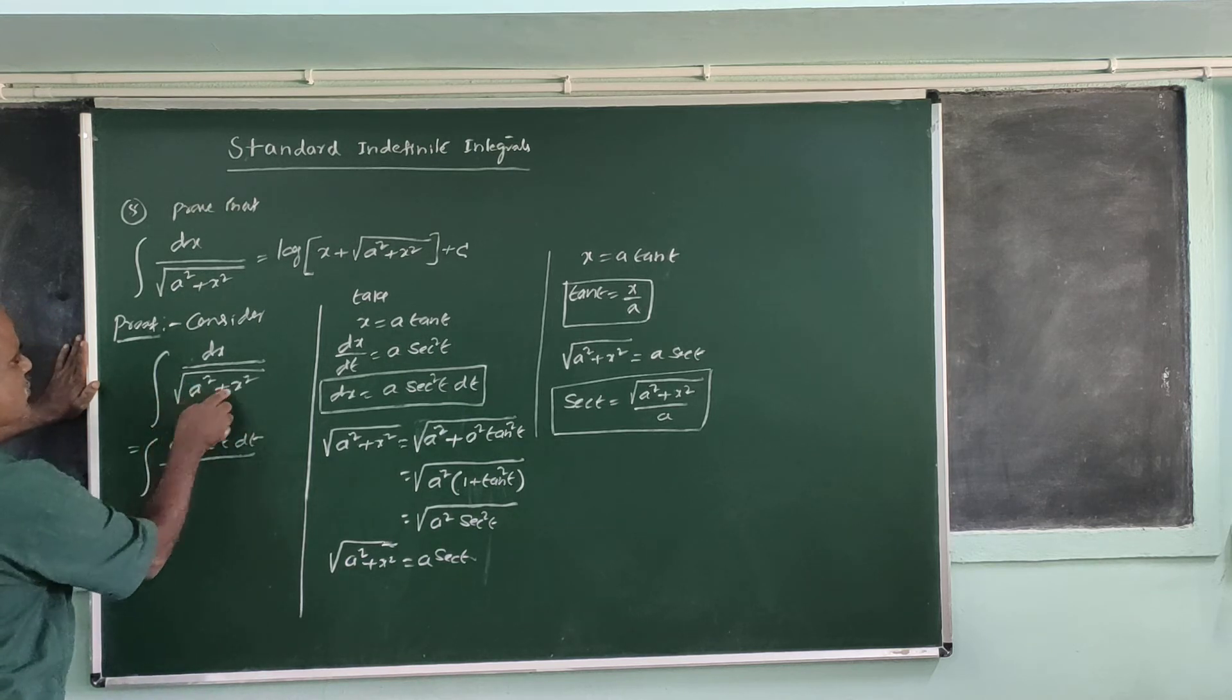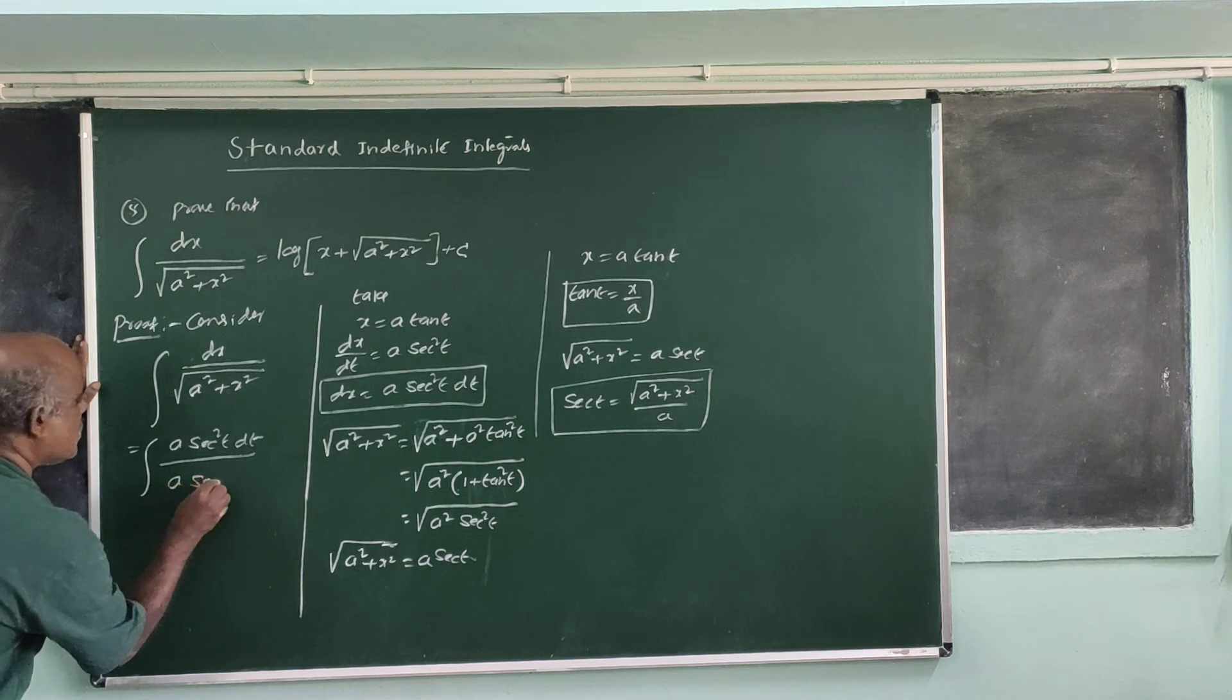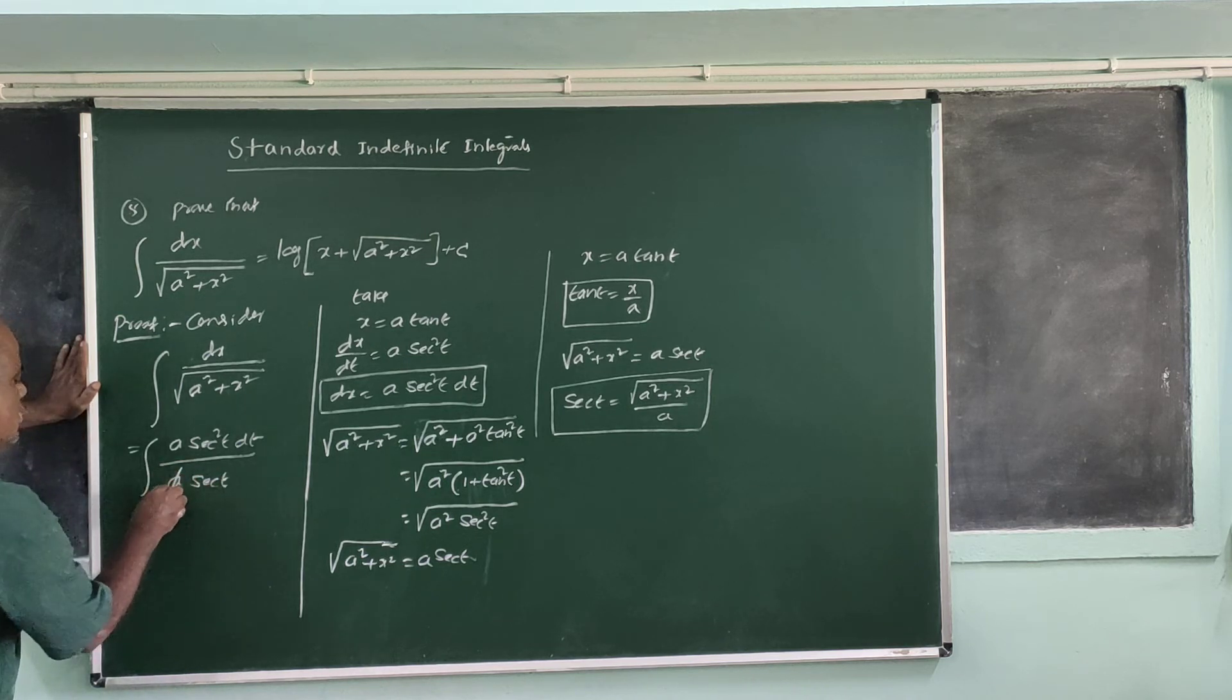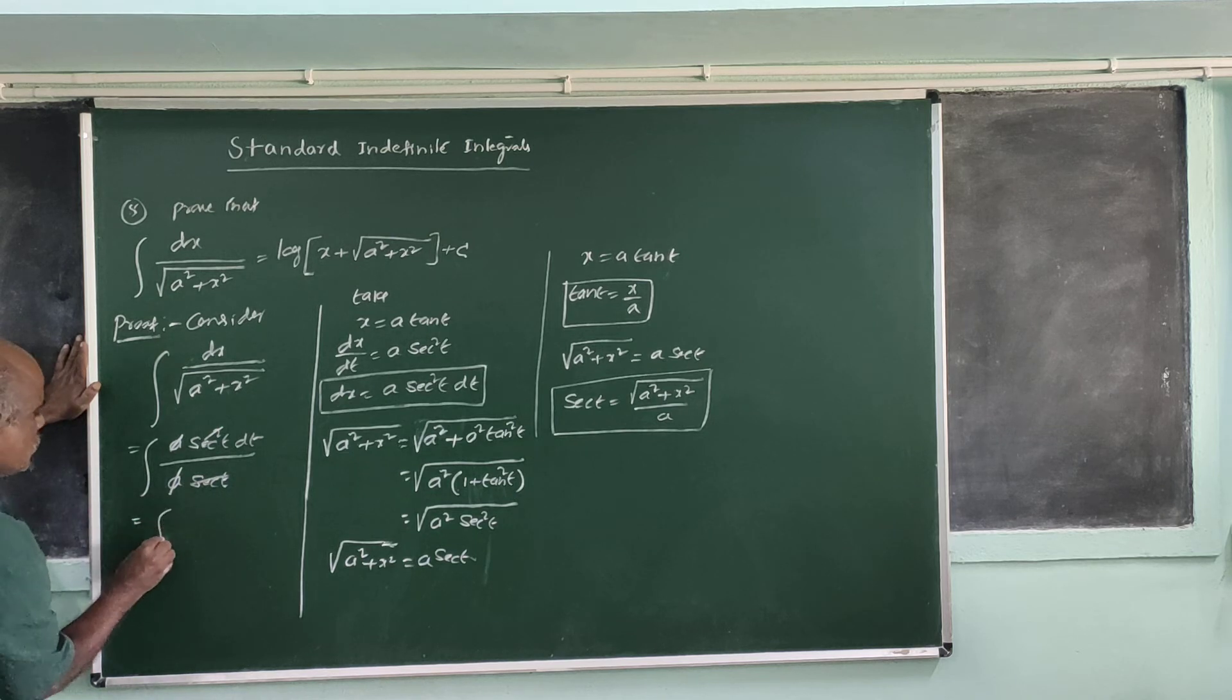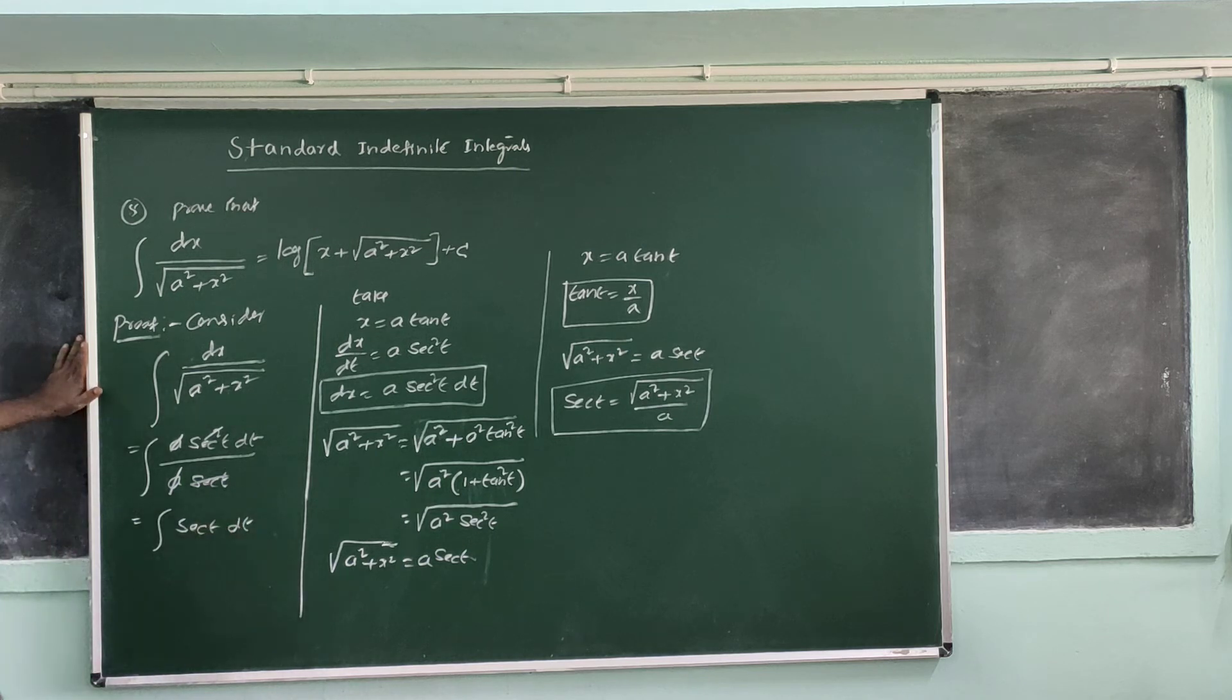So the integral becomes a secant squared t dt over a secant t, which simplifies to secant t dt.